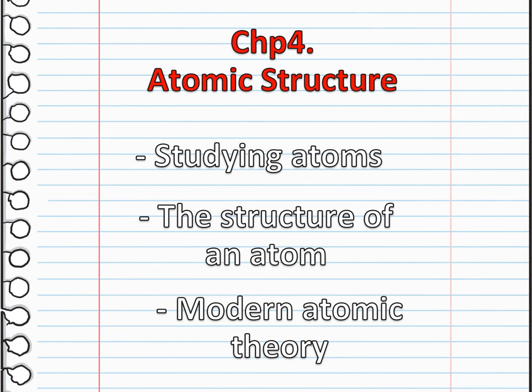Moving to chapter 4, which technically talks about the atomic structure. We are going to study atoms, study the structure of an atom, and how it differs. We are also going to talk about the modern atomic theory, which establishes the concept of the atom — atoms consist of negatively charged electrons around a central nucleus composed of more massive positively charged protons and electrically neutral neutrons. We will talk about who mainly proposed modern atomic theory, which is chemist John Dalton.